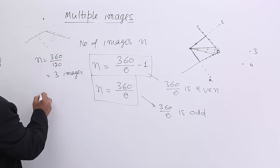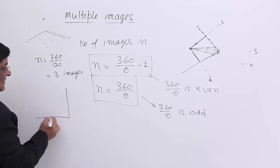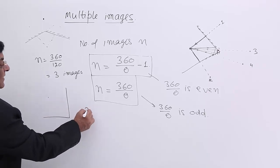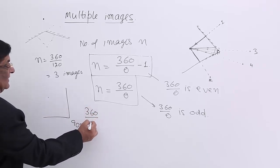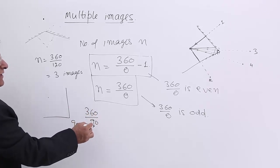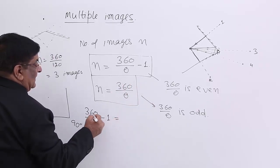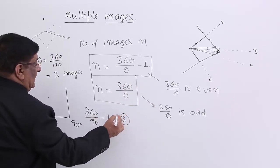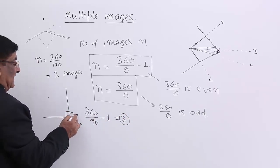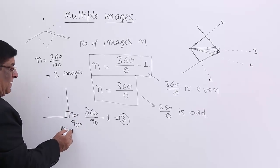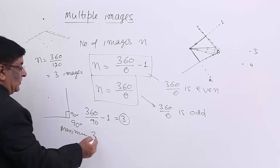Now if the angle is 90 degrees, then at a suitable place we stand and we see the number of images: 360/90. This is an even number, so this formula will be applied minus 1, that is equal to again 3. So even if this angle is 90 degrees, we will be able to see maximum 3 images.